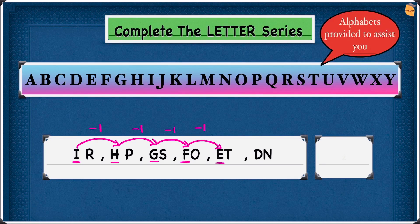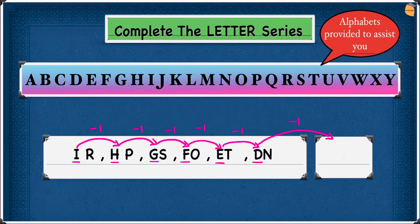So we're going to do E to D now. Looking at the alphabet, E is here and D is here — one step backwards, also minus 1. Now we have to do minus 1 from D to give us the answer. Looking at the alphabet, D is here — minus 1 — lands us at C. Write C.